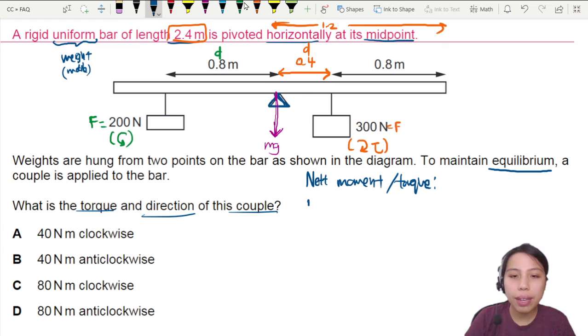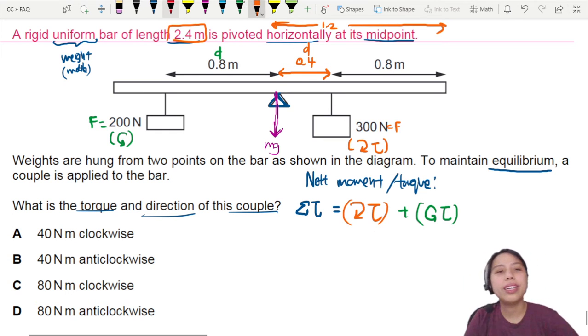The net moment that I find, net moment or net torque, would be the clockwise torque plus the anti-clockwise torque. This is a very strange way to draw it, but that's how I know how to write it out.